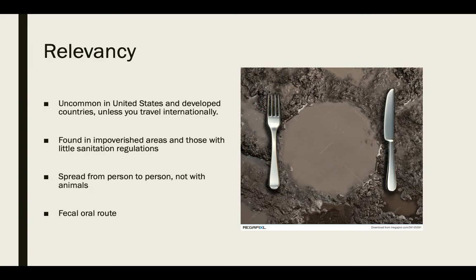In current years, typhoid fever is relatively uncommon in the United States due to current health regulations, and it's more common in other countries such as Asia, Africa, and even islander countries. This is largely due to sanitation systems. Studies have shown that an outbreak of typhoid fever in Kasese district in Africa, an area literally flooded with environmental concerns, proves high incidence rates of the disease. In the United States, we have centralized sewage and most people follow practices such as washing hands, which helps eliminate the cases of the disease spreading.